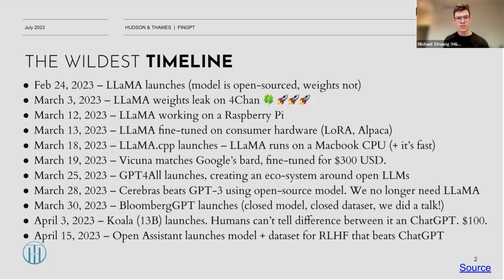Since those weights leaked on 4chan, Meta ended up changing their license agreement — instead of suing people, they said you can't use it for commercial stuff, but for research, go ahead. On March 12th, we saw Llama working on a Raspberry Pi. A day later, it was fine-tuned on consumer hardware using just a single 4090, using a technique known as LoRA, and this produced the Alpaca models. Five days after that, Llama.cpp ended up launching, which got Llama to run on a MacBook CPU fast, generating tokens rapidly — an amazing breakthrough that spawned its own framework.